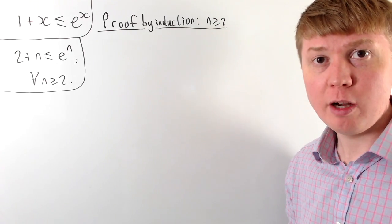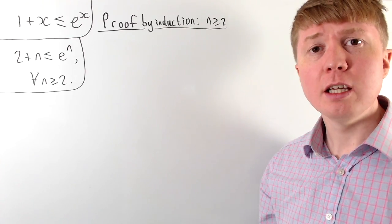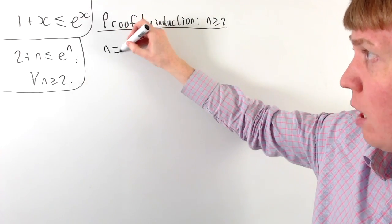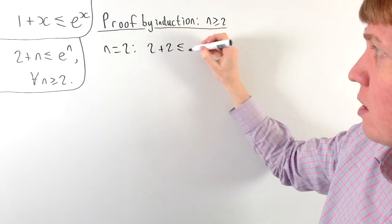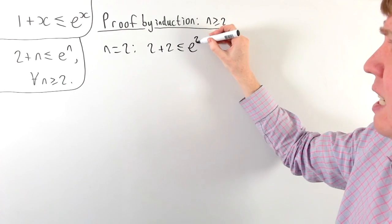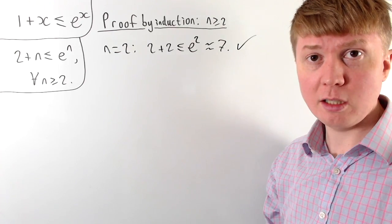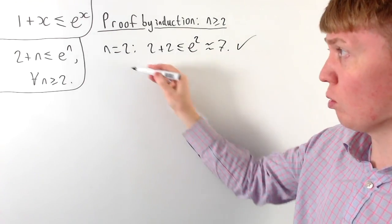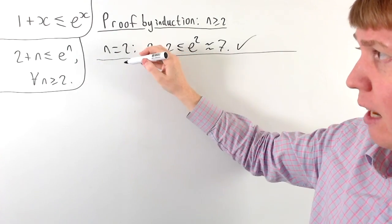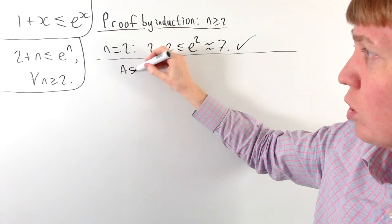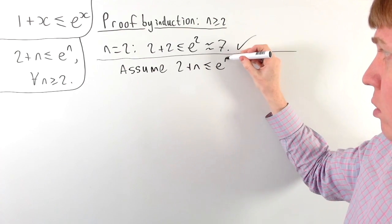The first step is to verify the base case: that 2 plus n is less than or equal to e to the n when n equals 2. When n equals 2, we have 2 plus 2 equals 4, and this is indeed less than or equal to e squared, since e squared is around 7. So the inequality is satisfied for the base case n equals 2.